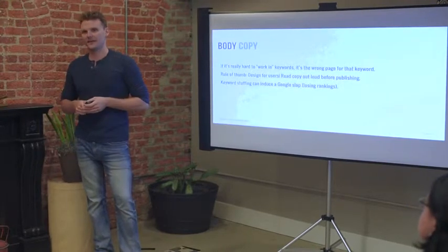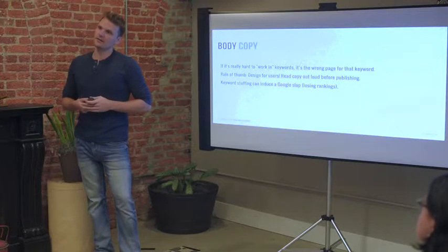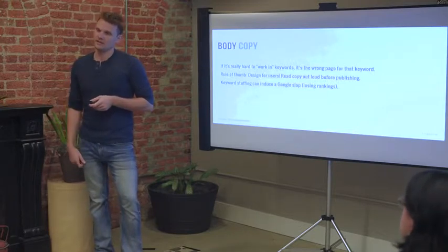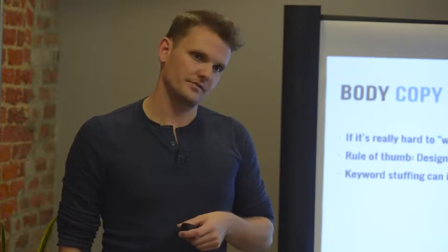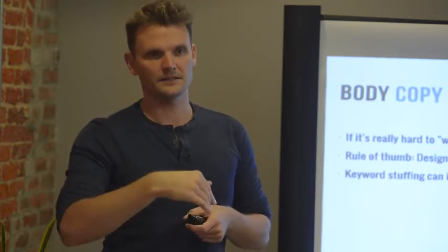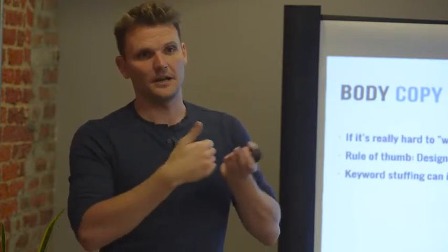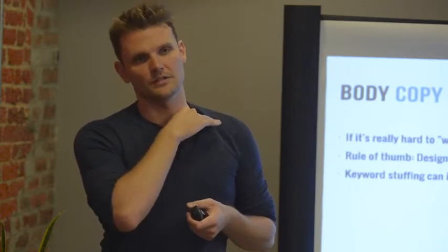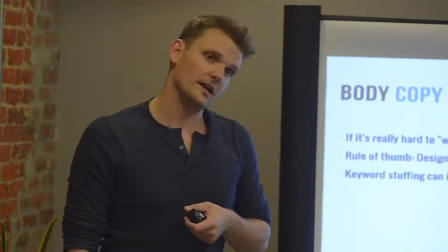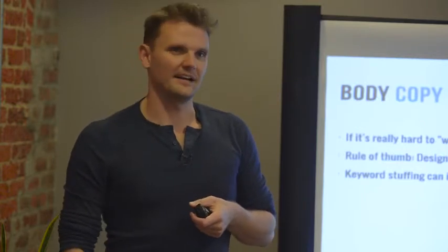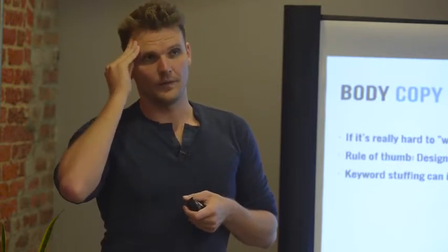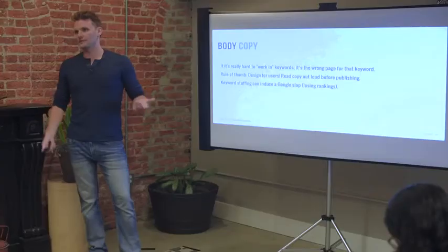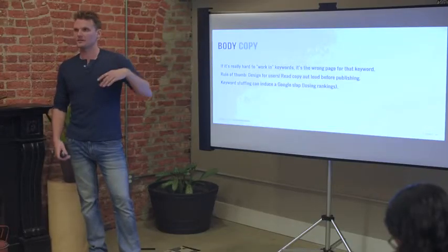Is a Google slap an automated algorithm or a manual one? It's both. There are algorithmic penalties where Google can automatically detect that you're doing something malicious and penalize you. But they also do manual review — they have an incredibly robust manual review process with guidelines. You can actually read the Google quality rater guidelines and see what they're looking for. They ask reviewers simple questions like: would you send this site to a friend? Would you trust it with your credit card? Does it sound strange when you read it out loud? It's more efficient to have humans do it rather than robots. So the answer is both — algorithmic penalties like Panda and Penguin, and manual ones as well.